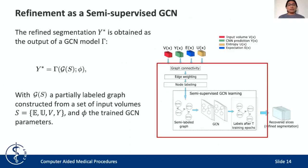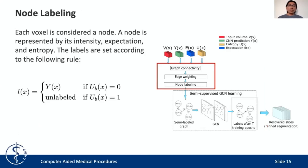The segmentation refinement is given by the output of a graph convolutional neural network, which is trained on a graph built based on the uncertainty analysis. The elements used to construct this graph are: first, the original input volume; second, the prediction of the CNN; and also the expectation and the uncertainty computed from the uncertainty analysis. Each voxel is considered to be a node in the graph. Each node is represented by its intensity, expectation, and entropy, and we use these three components as features for each node.